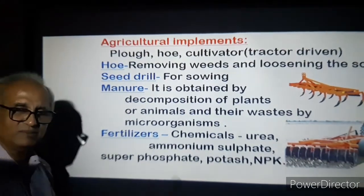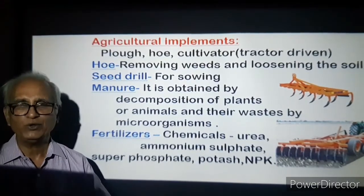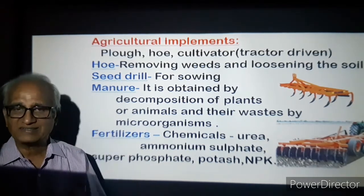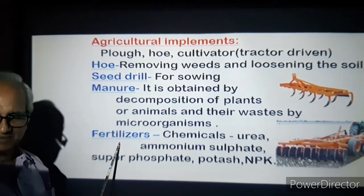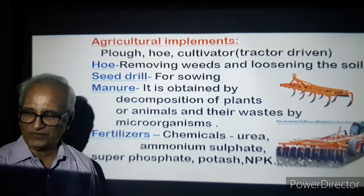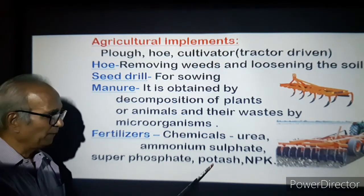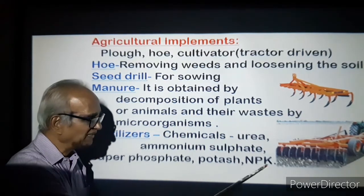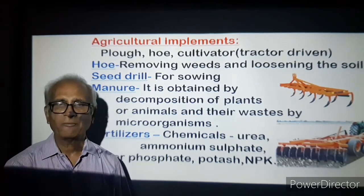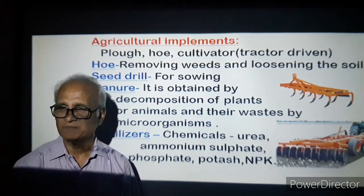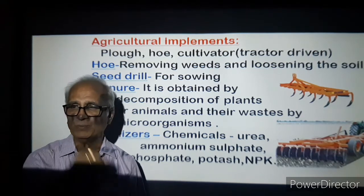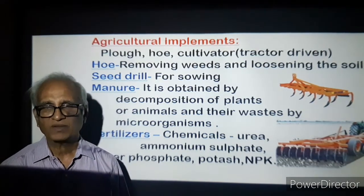Fertilizers: manures are homemade — the farmer gets manure made on his own farm. But fertilizers come from fertilizer factories; with the help of chemicals, we manufacture them — they are artificial chemicals. Examples include urea, ammonium sulfate, superphosphate. All these fertilizers will have NPK: N stands for nitrogen, P stands for phosphorus, K stands for potassium. It is a combination of these three most important elements that a plant needs to grow. Sometimes the soil must be properly analyzed in laboratories before we decide how to proceed.